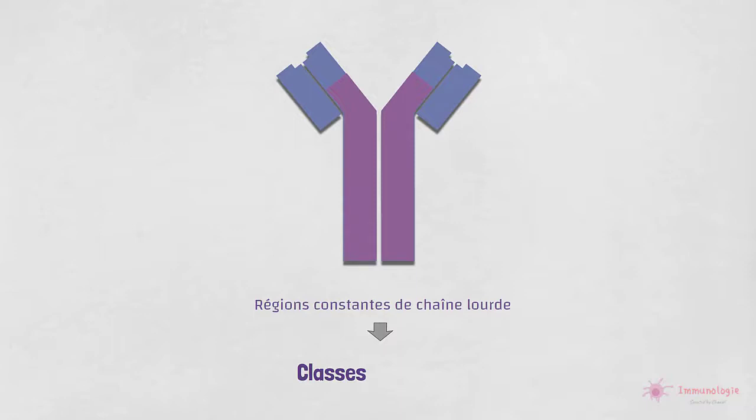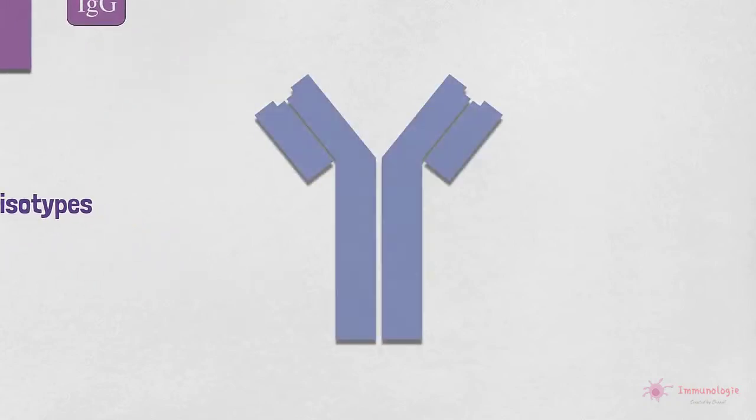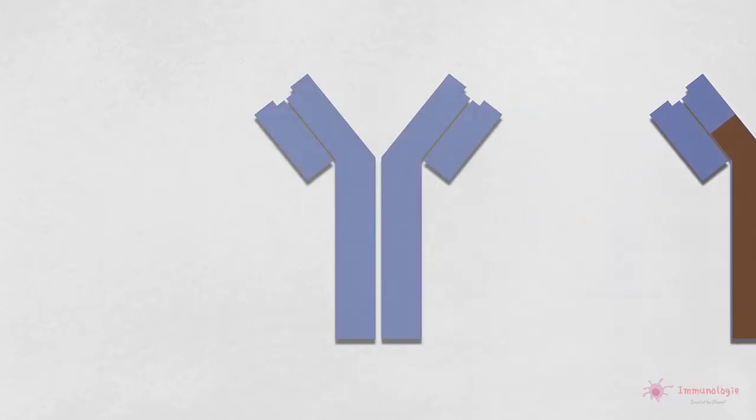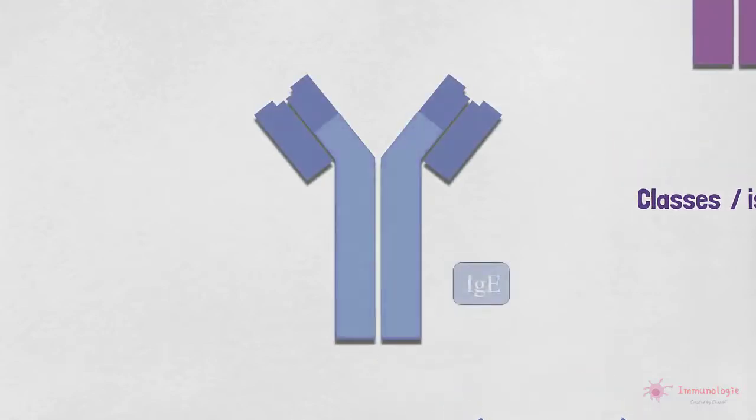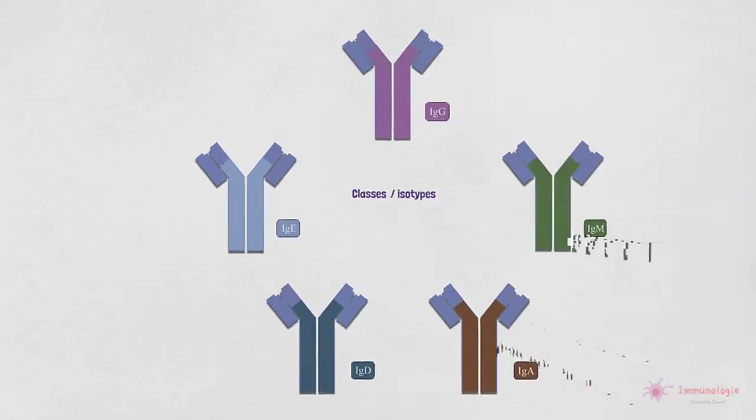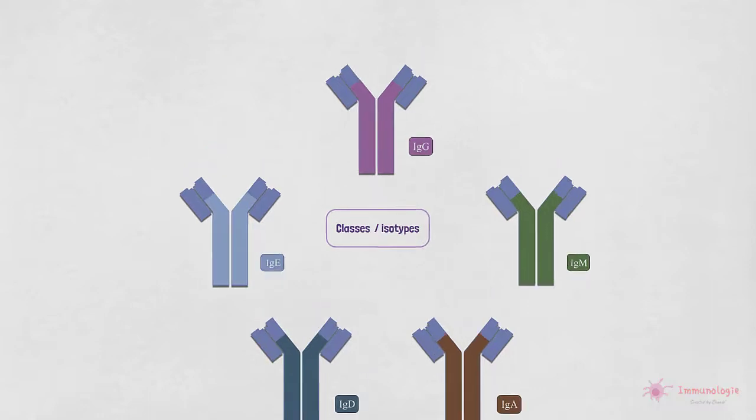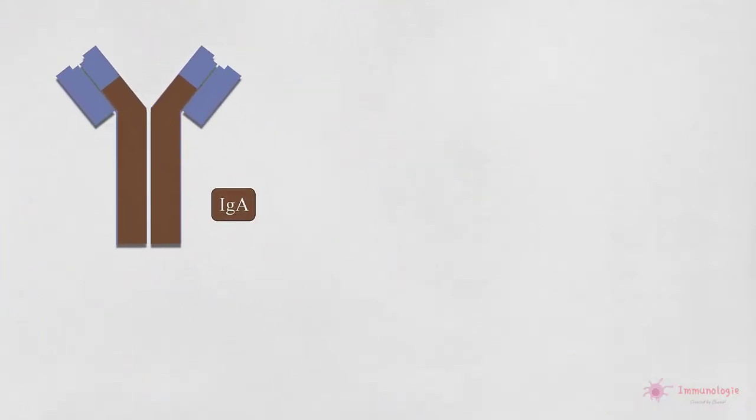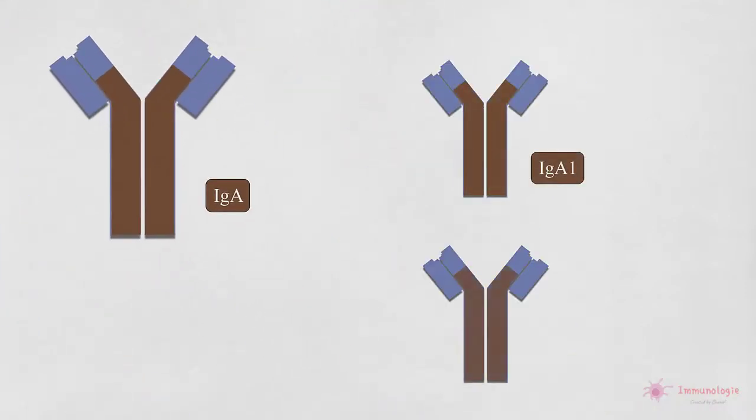Les classes d'anticorps sont aussi appelées isotypes et sont nommées IgG, IgM, IgA, IgD et IgE. Chez l'homme, l'isotype IgG peut être divisé en quatre sous-classes ou sous-types, et l'isotype IgA en deux sous-classes.